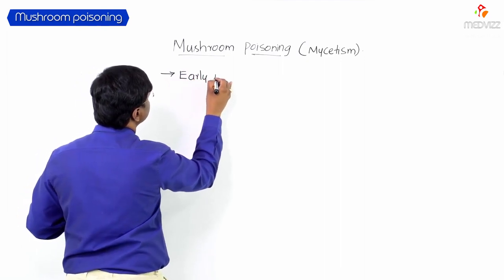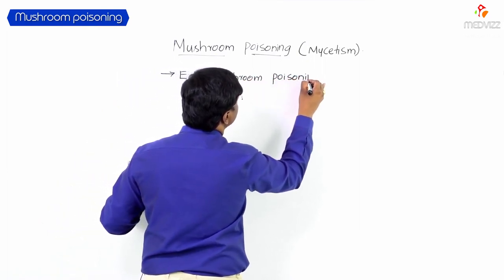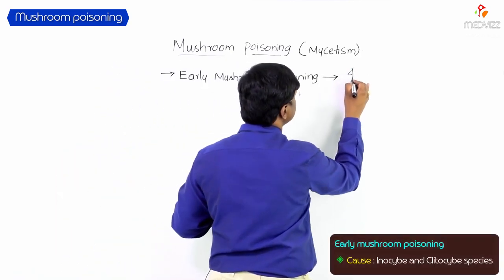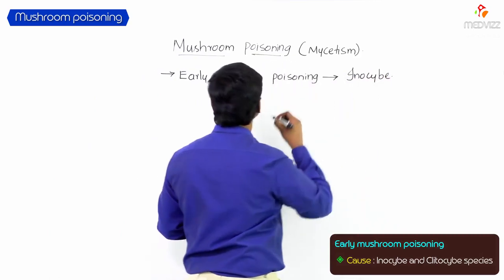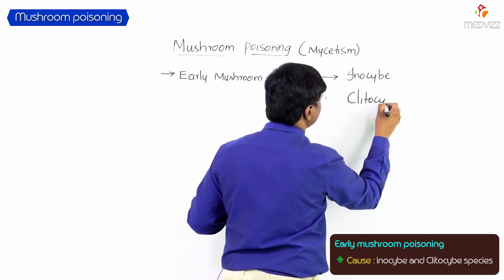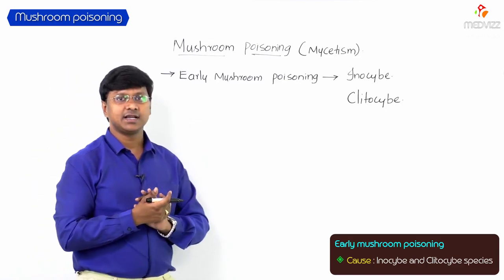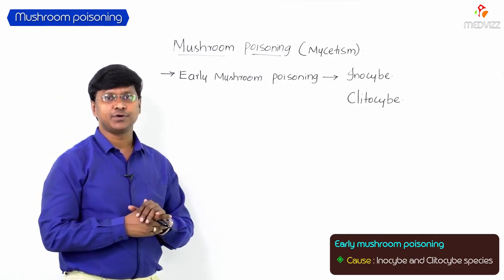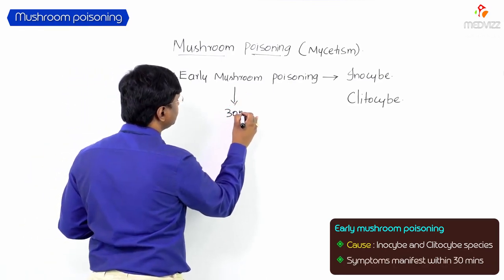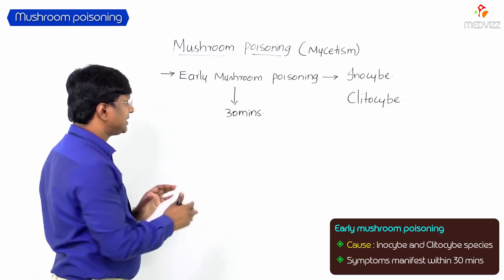Early mushroom poisoning is caused by two important species: the Inocybe species and the Clitocybe species. In early mushroom poisoning, the symptoms manifest within 30 minutes of ingestion.